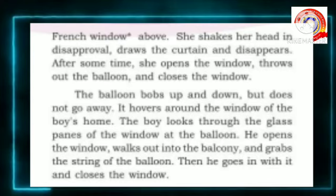I will give the detailed explanation. The next scene is in another part of the street. We know the boy ran from the old bridge and disappeared. But now he reached his home. His mother was watching him from the balcony through the glass pane of the French window.